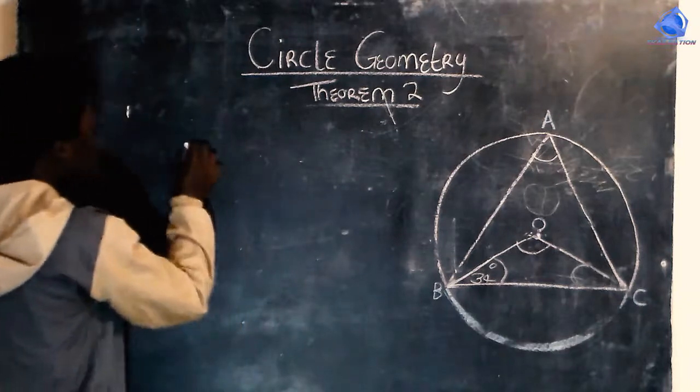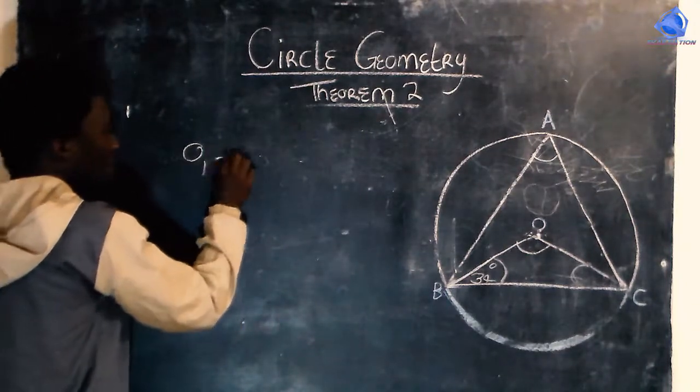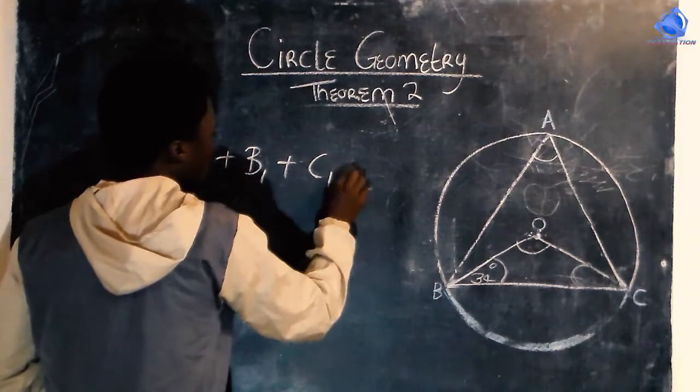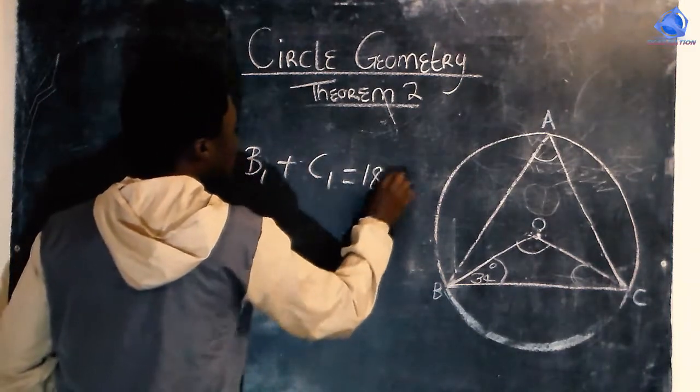So if there's a plaza, O1 plus OB1 plus OC1 is equal to 180 degrees.